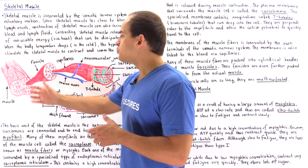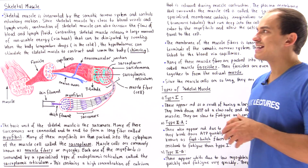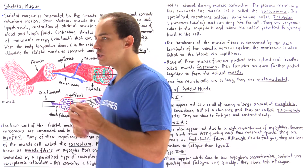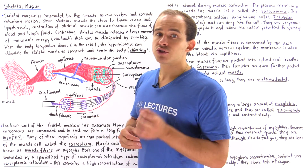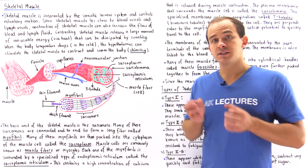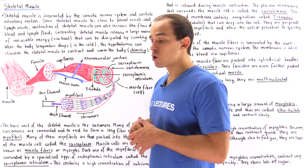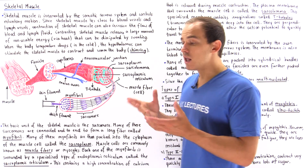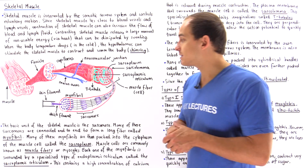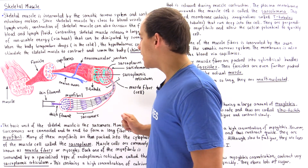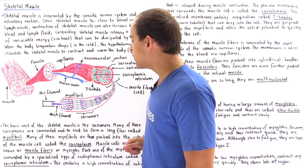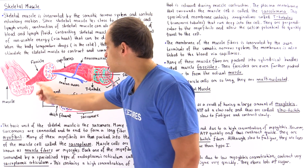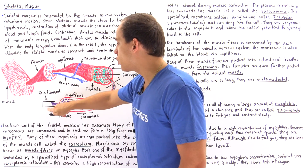Now let's move on to the structure of our skeletal muscle. The smallest functional unit of the skeletal muscle is our sarcomere. The sarcomere consists of thick filaments made up of a protein known as myosin and thin filaments made up of a globular protein known as actin, as shown in this diagram. The thick filament is shown in purple with myosin heads that attach to our thin filament shown in black.